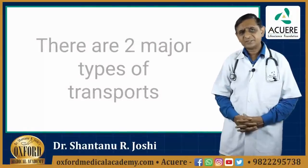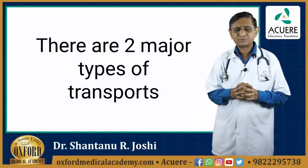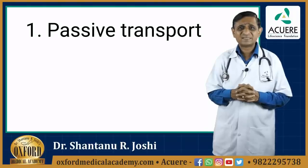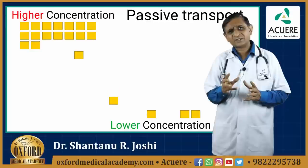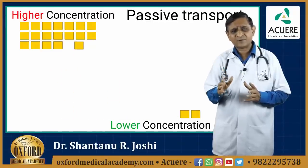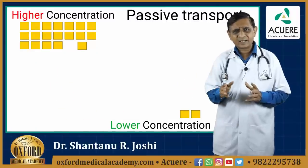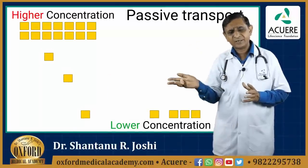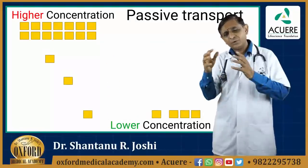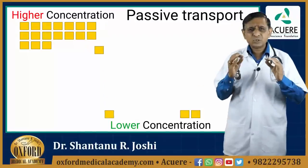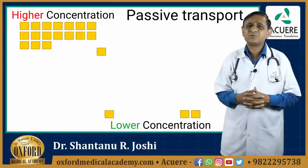Dear students, if you go into the details of the transport, you will find that there are two major types of transports. One is passive transport. The passive transport is a type of transport which is always from the higher concentration to the lower concentration — that is in the direction of concentration gradient. When the drug is being transported from higher concentration to lower concentration, there is no need of spending energy. And that is why we call it passive transport.